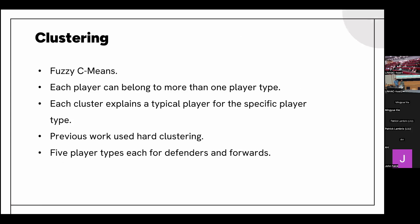To retrieve player types from these player vectors, we apply a Fuzzy C-means clustering algorithm. In Fuzzy C-means, each data point — in this case each player — can obtain a certain degree of membership to each cluster, meaning each player can belong to more than one player type. This is where our work stands out from previous work, which used hard clustering where a player can only have one player type. We evaluated the clustering model over a range of cluster numbers and found that five was optimal, resulting in five player types for both defenders and forwards.